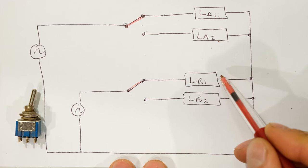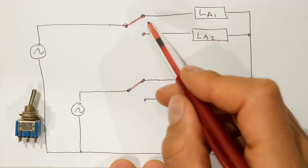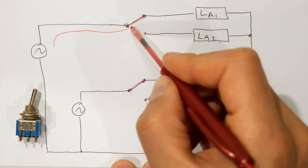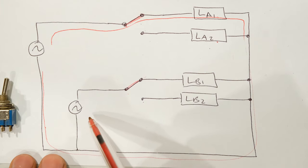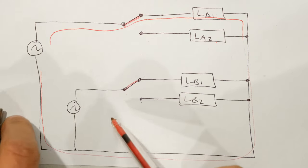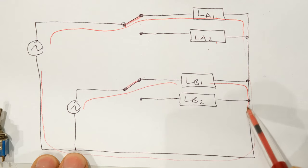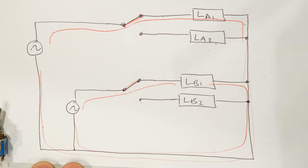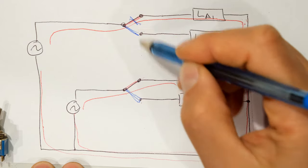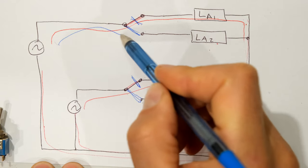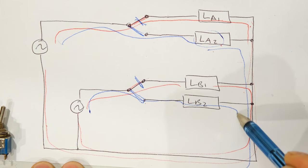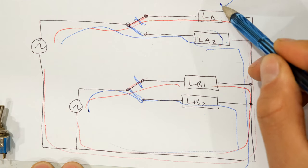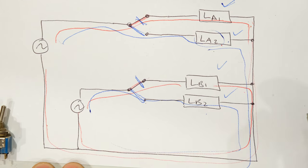I'll take measurements and show you, but first let me explain what happens when I close the switch. The switch is currently in one position: current can flow there through that and back to the supply. In the bottom part of the switch — the other section — current can flow into load B1 and back to the supply. So we'll have two circuits active. Then when we move the switch, one set opens up and now we'll have current flowing in load A2 and in load B2, keeping in mind they are independent from each other.